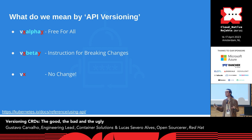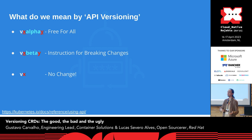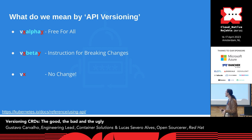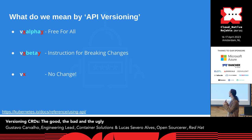On alpha versions, it's kind of free-for-all. Changes can be breaking changes — the idea is to get things fast so you can get feedback. On beta versions, you try to avoid breaking changes, but you can still have them; it's better to have more comprehensive upgrade instructions. On stable versions like V1, V2, V3, ideally there are no changes inside a version, and people can trust that a manifest they apply will always work.